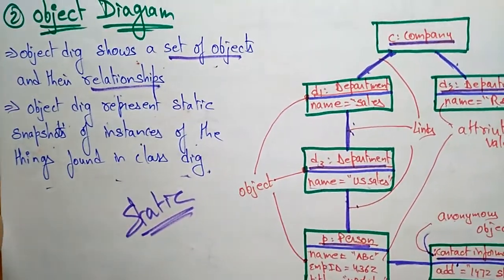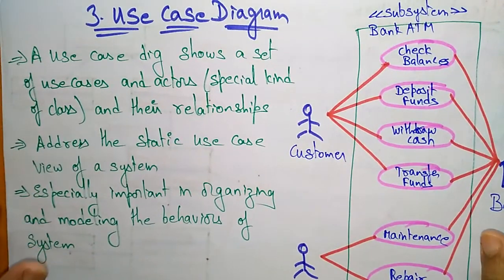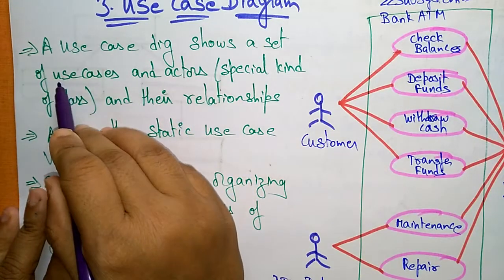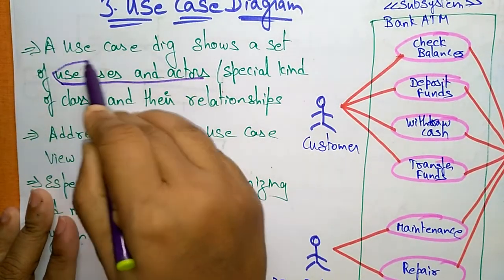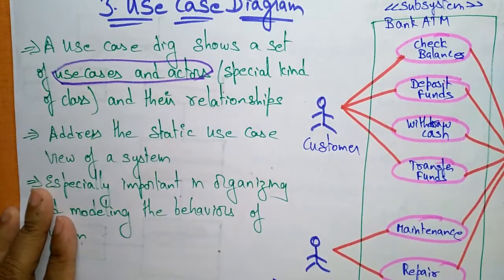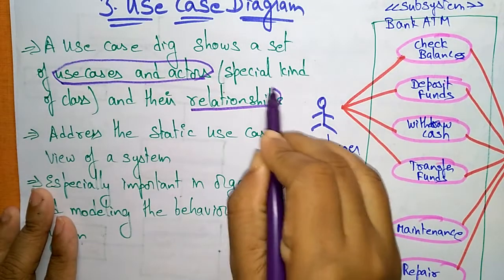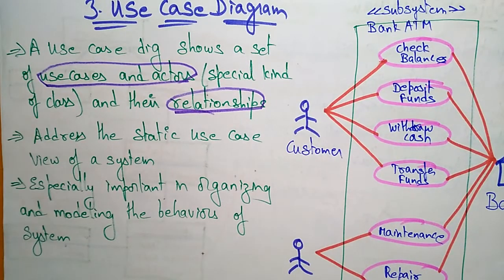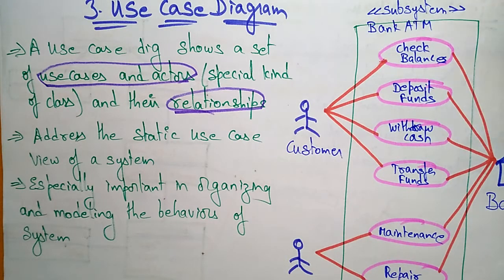Now let us see the third diagram: the use case diagram. The use case diagram shows a set of use cases and actors. It consists of use cases, actors, and relationships. Use cases are special kinds of things, and actors are special kinds of classes in which you have already declared the actions to be performed.